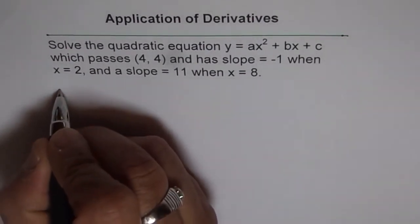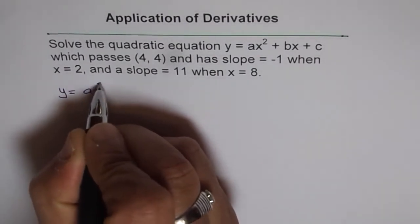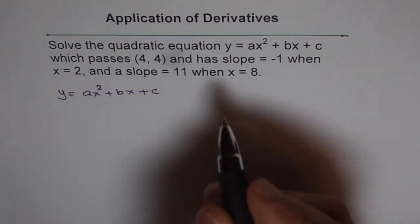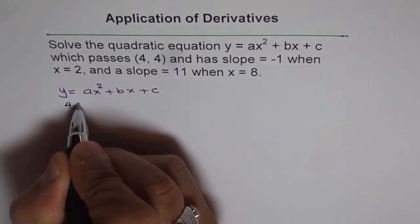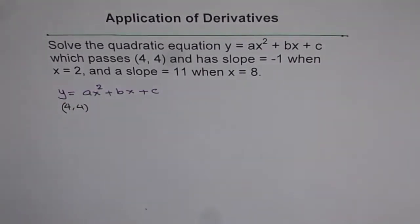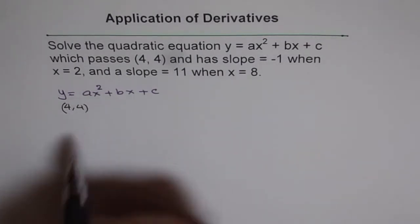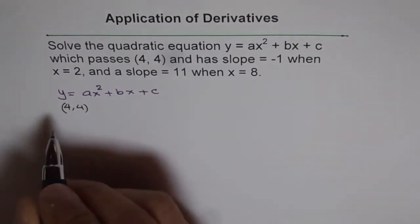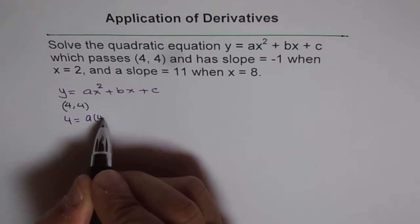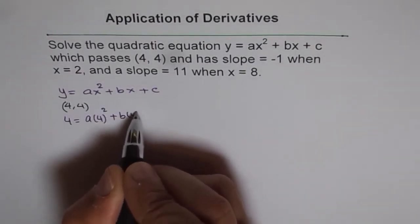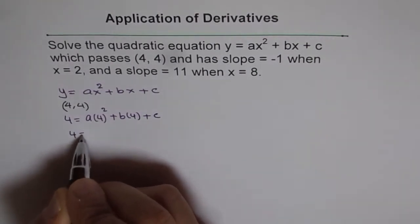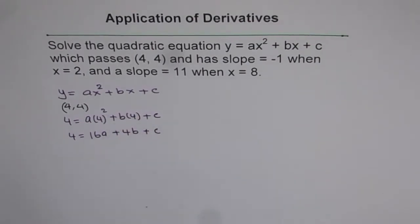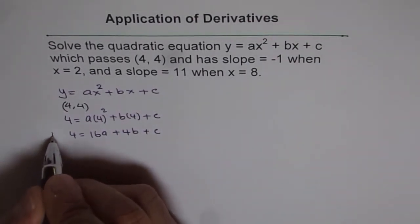Let us write down the equation: y equals ax squared plus bx plus c. Now we will use the first condition, which is that it passes through the point (4, 4). Since (4, 4) lies on the curve, we put x equals 4 and y equals 4, giving us: 4 equals a times 4 squared plus b times 4 plus c, which gives 4 equals 16a plus 4b plus c. We will call this Equation 1.